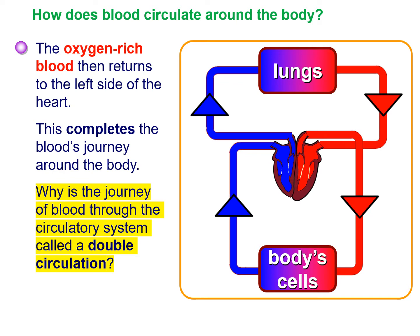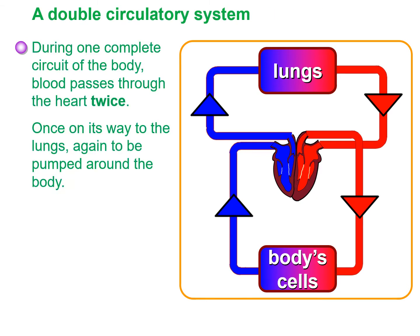The question to answer on your paper is: why is the journey of the blood through the circulatory system called a double circulation? It's called a double circulatory system because during one complete circuit of the body, blood passes through the heart twice. That gets you one mark. For a second mark, you could expand by saying it goes to the lungs, enters the heart, and then gets pumped to the rest of the body. You can also be credited for mentioning blood being pumped at different pressures.